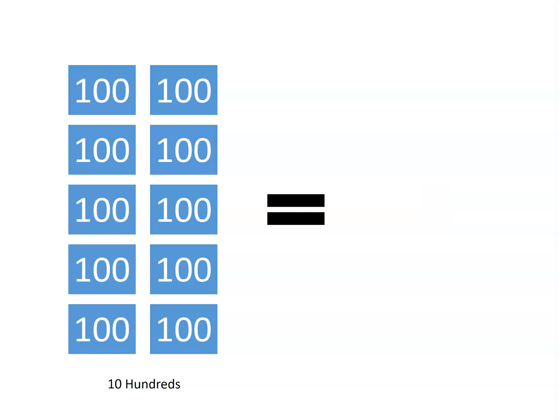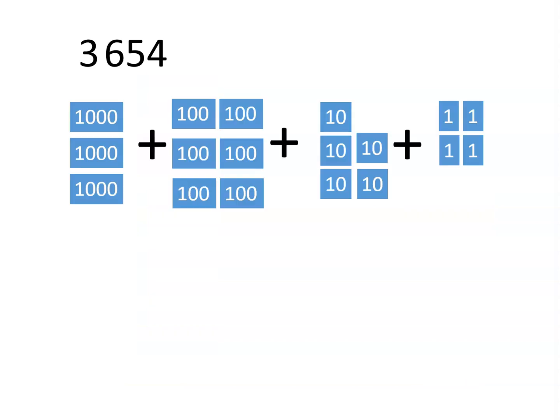10 hundreds is the same as 1,000. Let's start with 3,654, pictured here, with 3 thousands, 6 hundreds, 5 tens, and 4 units.